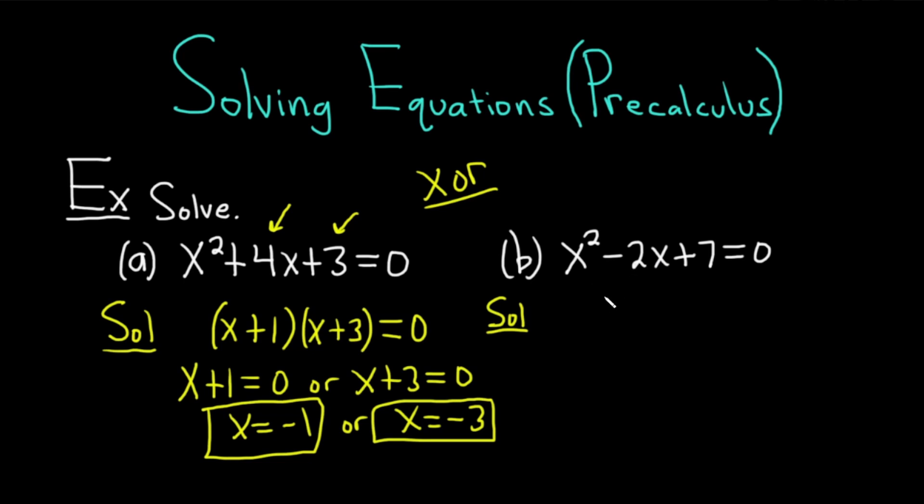So we're going to take a different approach. We're going to complete the square. In the process of completing the square, what you want to do is you want to start by isolating all of your terms that have x's. So we'll subtract 7 from both sides. We get x squared minus 2x equals negative 7. Then you want to make sure that you have a coefficient of 1 in front of your x squared, which we do. So you isolate your x's.